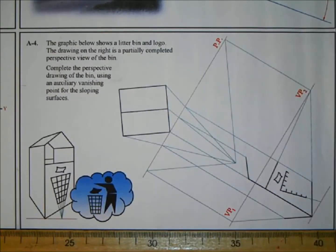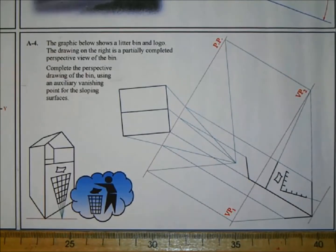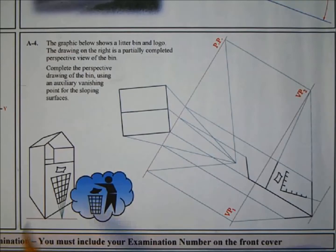Hi and welcome to another DCG tutorial. This question is the 2012 paper section A, question A4. It's a short question and the topic is perspective. The graphic below shows a litter bin and logo. Here's our litter bin and here's our logo.